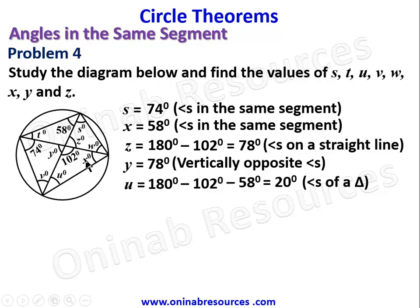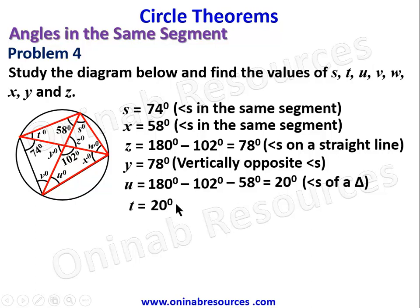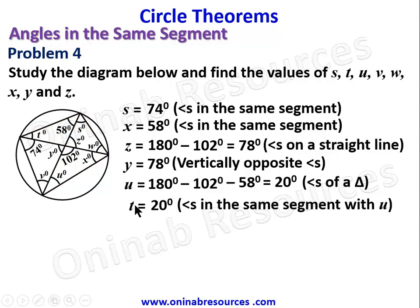We check whether u is equal to anything. Looking at the chord, t is connected to u via the same segment. Since u is 20 degrees, t is equal to 20 degrees — angles in the same segment with u.